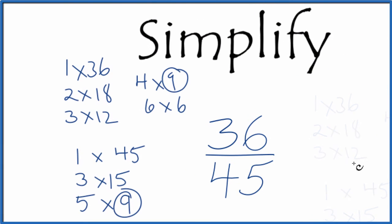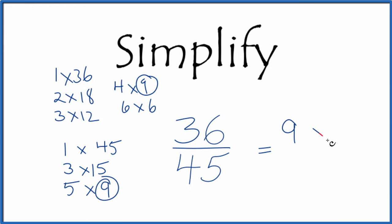Let's move this over here. So we could say that 9 times 4, that equals 36, 9 times 4. And then 9 times 5, that equals 45. Since we have 9 on the top and the bottom, let's cancel that out.